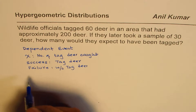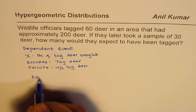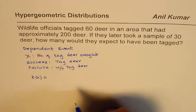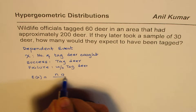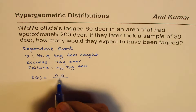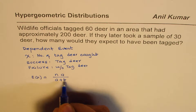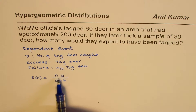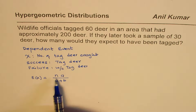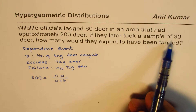In hypergeometric distribution, the formula for expectation equals n times A divided by the total population, which we may write as A plus B. Where n is the total number of trials, which in our case is 30.